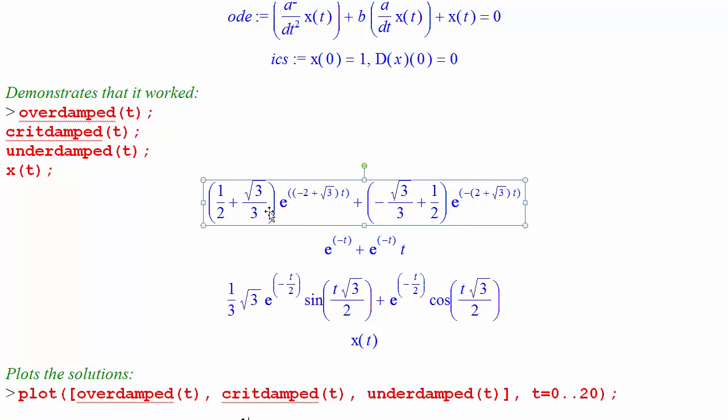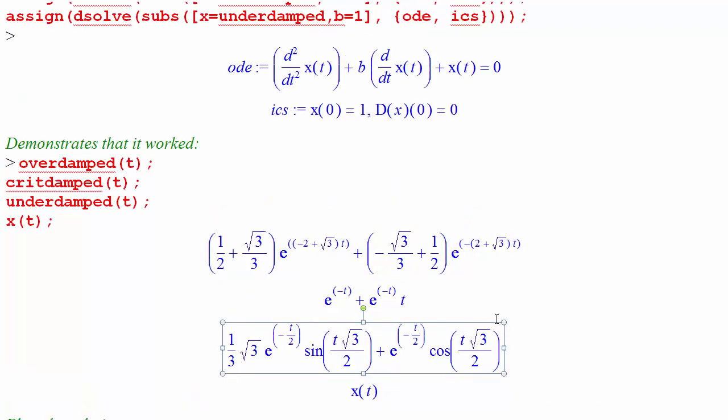Notice the overdamped has real exponentials. The critically damped is an exponential multiplied by this linear term and the underdamped is decaying exponentials modulating sine and cosine terms as promised.